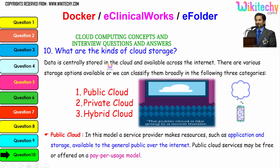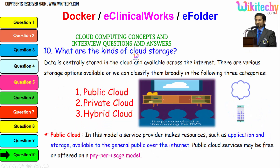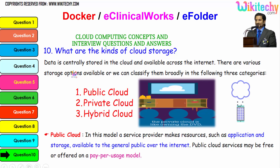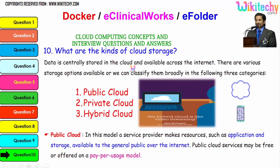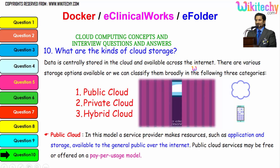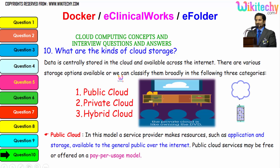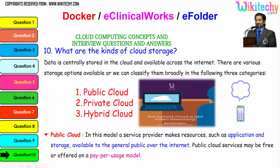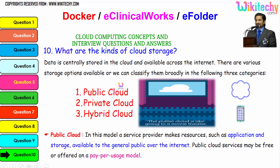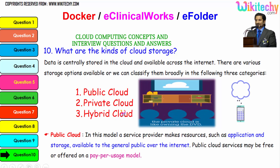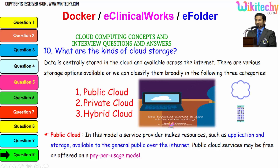Now let's talk about the kinds of cloud storage. Data is centrally stored in the cloud and available across the internet. There are three major storage options available. We can classify them broadly into the following three categories: public cloud, private cloud, and hybrid cloud.